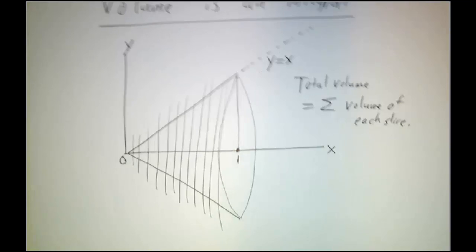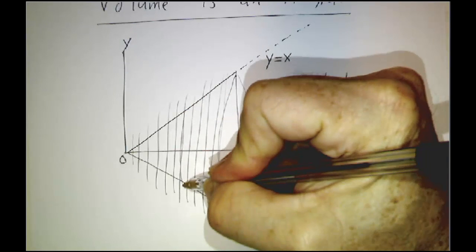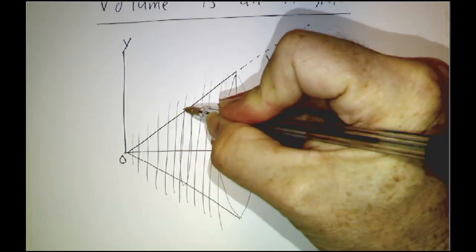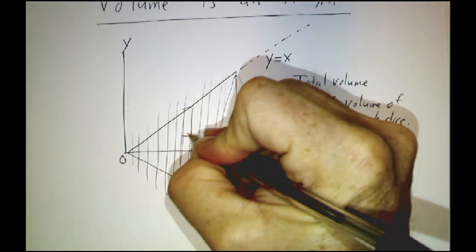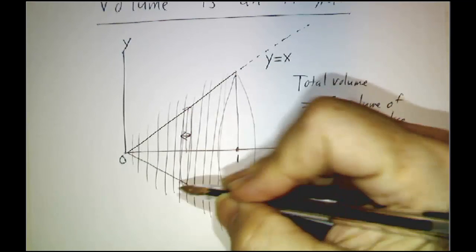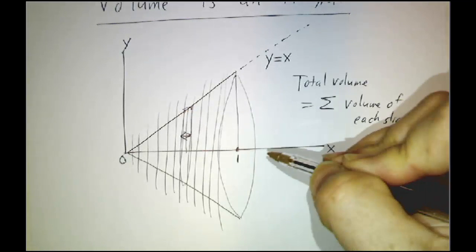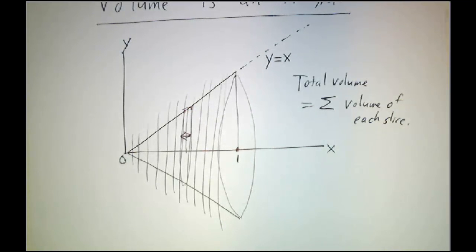But we kind of do know, because when you get a slice, it's basically a disk. It's got a certain thickness, and it's got a certain radius. Now it's not exactly a disk. It's a little bit thicker over here than it is over here. But to an awfully good approximation, each slice that you get out of the meat slicer is going to be a disk.